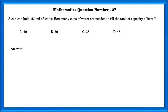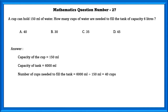Mathematics question number 27. A cup can hold 150 ml of water. How many cups of water are needed to fill a tank of capacity 6 liters? 6 liters equals 6,000 ml. Number of cups needed is 6,000 ml divided by 150 ml, which equals 40 cups. It takes 40 cups of 150 ml of water to fill a tank of 6 liters.